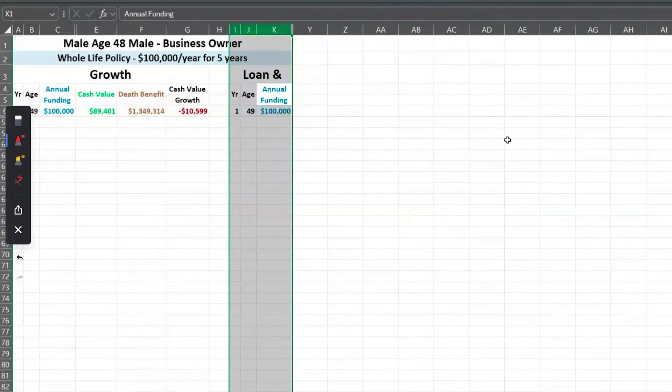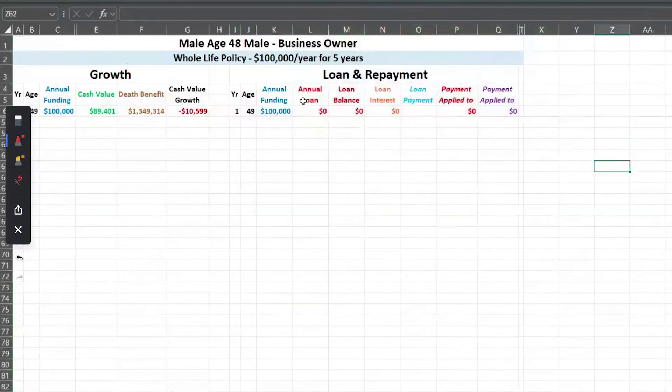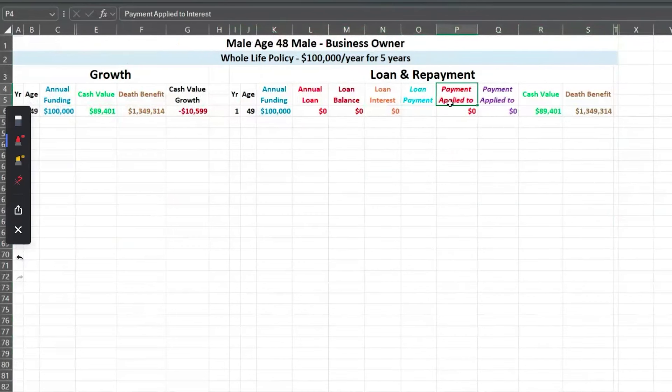So what we're going to look at here: loans coming out, this is money he gets. Loan balance: this will be the loan balance on the policy. Loan interest: if it's in orange that's going to assume that we're paying interest only, or this will isolate just the interest portion of the policy. You'll see exactly what I mean as we progress through this. Loan payment, and then also payment applied to the principal and payment applied to interest, and then our cash value and death benefit.